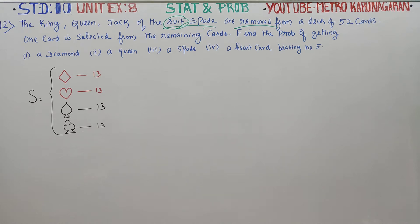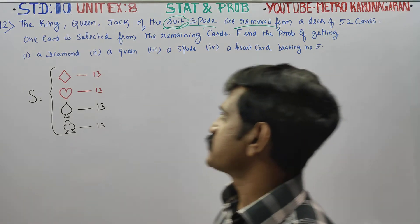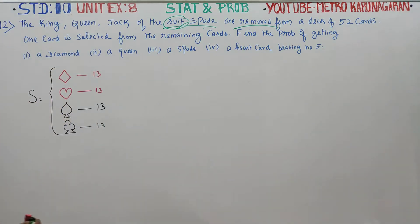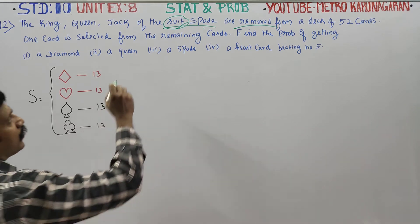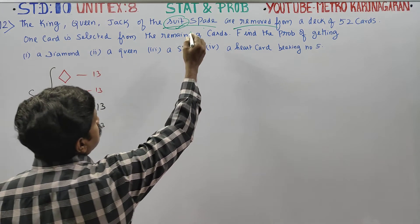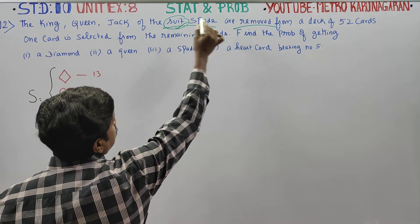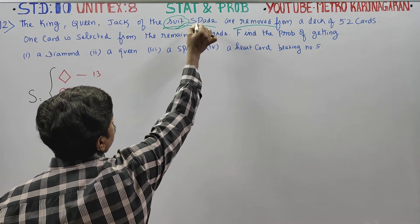Dear 10th standard students, in unit exercise number 8, statistics and probability, the last problem: the King, Queen, and Jack of the spade suit is removed.